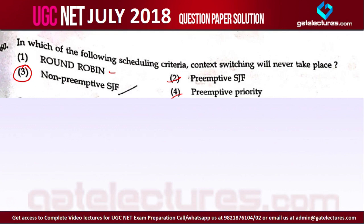Understanding this question like this: if a process is executing, it will not be disturbed — no context switching will happen in the middle of the execution. So option 3 is the correct answer for this question.